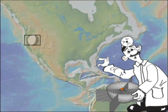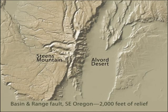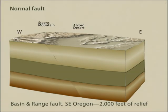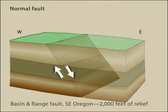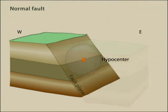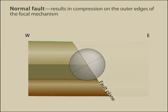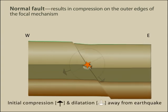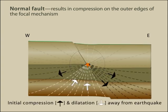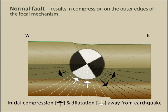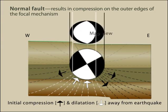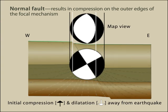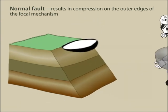Now let's look at the pattern of compressions and dilatations that result from an earthquake on a normal fault, like on the east side of Steens Mountains in the Basin and Range province. The block on the east side of this fault has dropped down with respect to the block on the west. Viewed in cross section, compressional first arriving P waves radiate to the east and west from the hypocenter at shallow and intermediate downward angles, while dilatational first arriving P waves leave the hypocenter at a steep downward angle. The resulting focal mechanism has perpendicular nodal planes that cut the lower hemisphere of the focal sphere in an orange slice appearance, with compressions on the outside and dilatations in the center.